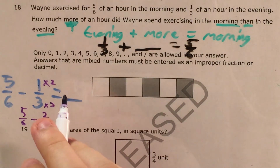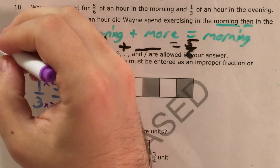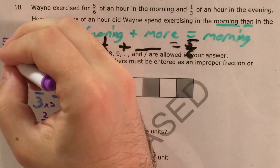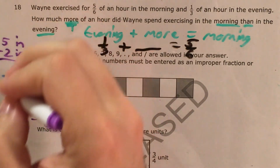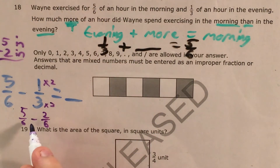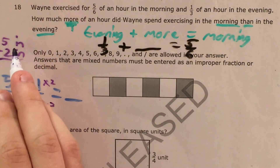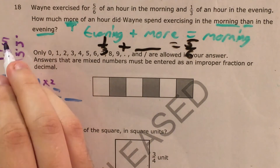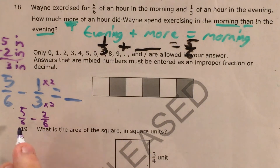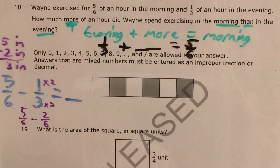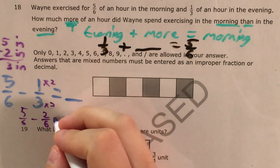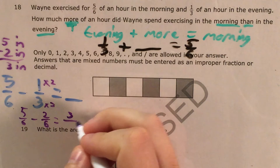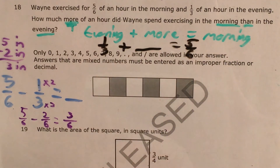As I always say in my other videos, when we subtract fractions with the same denominator, it's like subtracting five inches minus two inches — we subtract our numbers but keep the unit the same. We treat the denominator like our unit of measurement. So five-sixths minus two-sixths: five minus two is three, and we keep sixths the same.